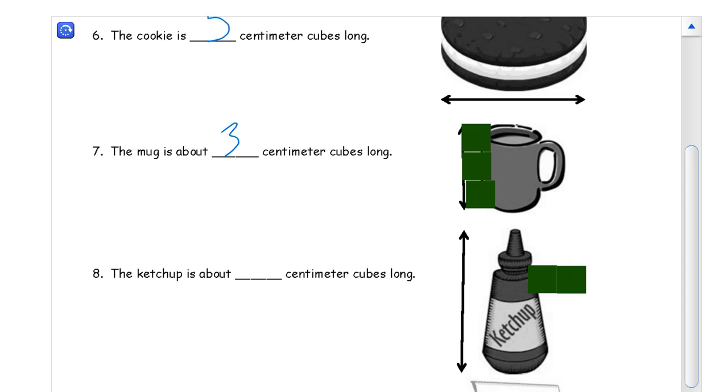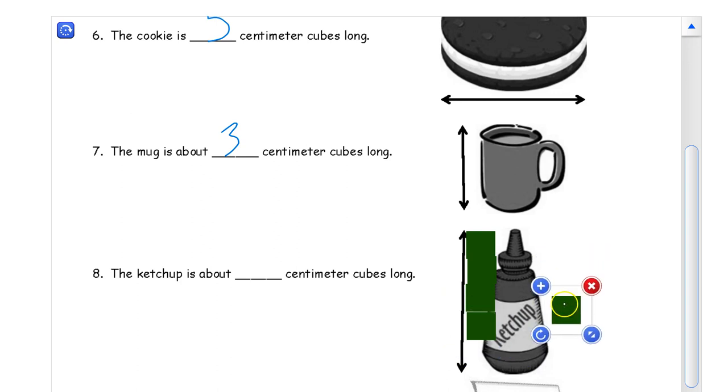Next we have to look at this thing of ketchup. And that looks like it might even be longer than the cookie, but it's going to be either five or six. One, two, three, four, five. So we go five.